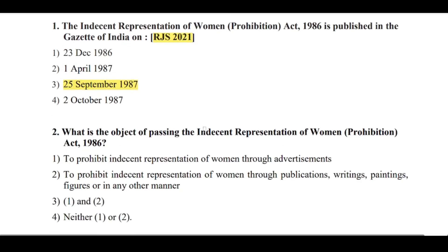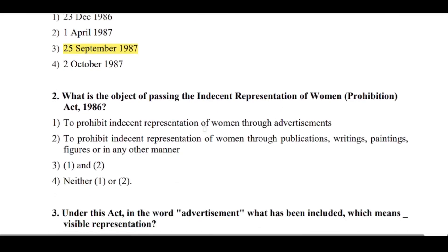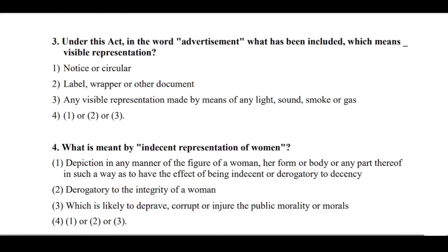Question No. 2: What is the object of passing the Indecent Representation of Women's Prohibition Act 1986? From our preamble — to prohibit indecent representation of women through advertisement, and through publication, writing, painting, figures or in any other manner. So the two main objects: through advertisement and through publication. Question No. 3: Under this Act, in the word 'advertisement,' what has been included — visible representation. Answer: notice, circular, label, wrapper, other document, and any visible representation made by means of any light, sound, smoke or gas.